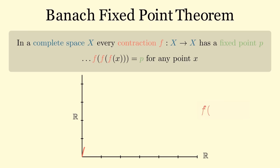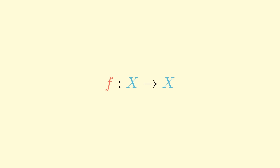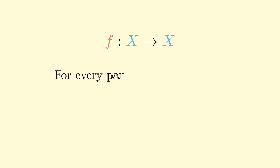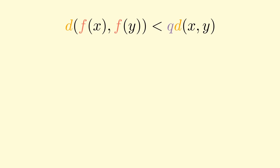Let's see how this applies to our square root function from before. Applying the square root function to every point on the curve shows us that this curve eventually shrinks in to the fixed point of the function. Now let's break down what all those words in the theorem mean. A contraction is simply a function from X to X — meaning f sends points in X to other points also in X. For the function to be a contraction, it also needs to satisfy an additional requirement: for every pair of points x and y, the distance between f(x) and f(y) is less than q times the distance between x and y, where q is some scaling factor between 0 and 1.